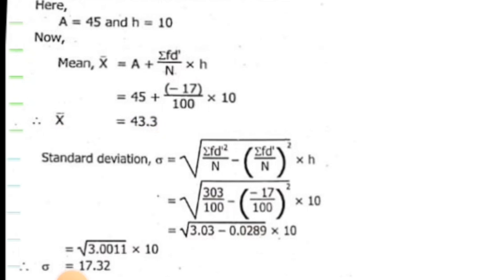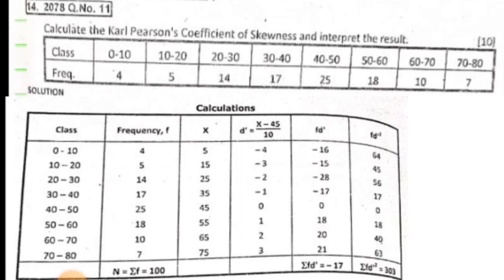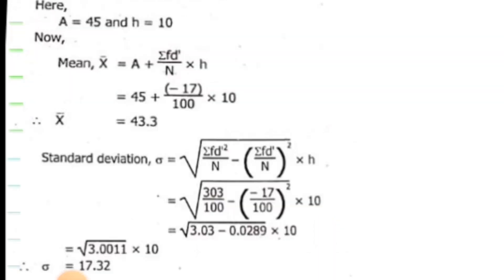Now standard deviation. The formula is under root summation fd' square upon n minus summation fd' upon n whole square into h. Under root 303 upon 100 minus minus 17 upon 100 square times h. 303 upon 100 equals 3.03 minus 0.0289. Calculation gives 17.32. So we have mean and standard deviation.